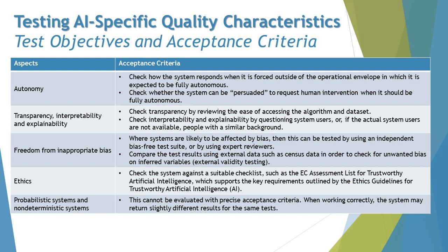When it comes to ethics, another AI-specific quality characteristic, the acceptance criteria could be to check the system against a suitable checklist — such as the EASA Assessment List for Trustworthy Artificial Intelligence — which supports the key requirements outlined by the Ethics Guidelines for Trustworthy AI. This makes it straightforward: the acceptance criteria for ethics are driven entirely by following this standard for AI.